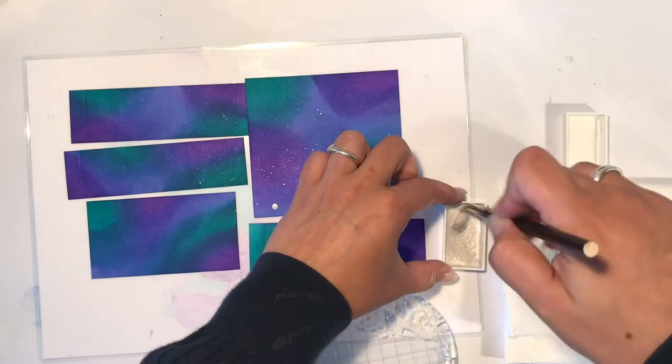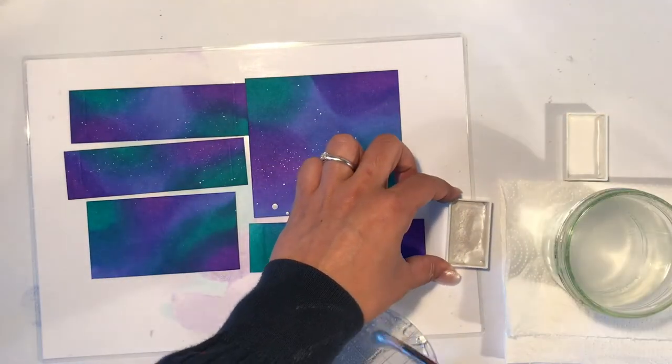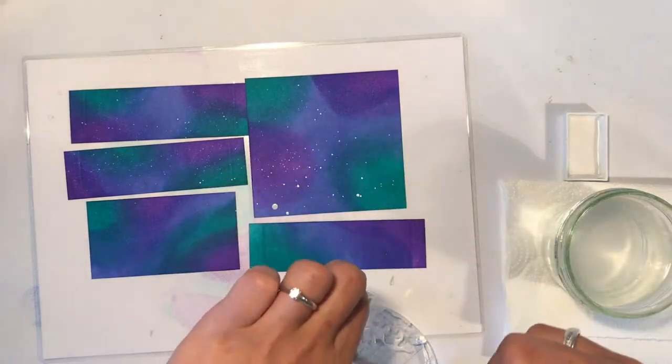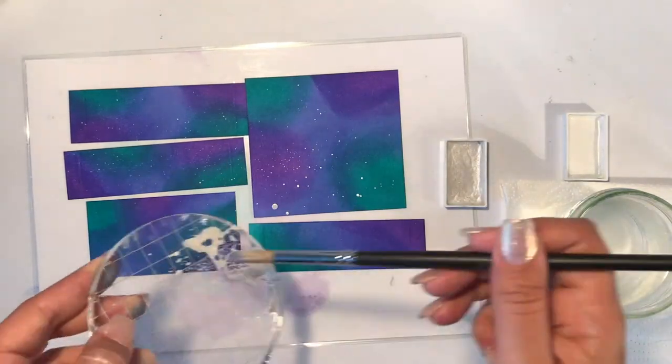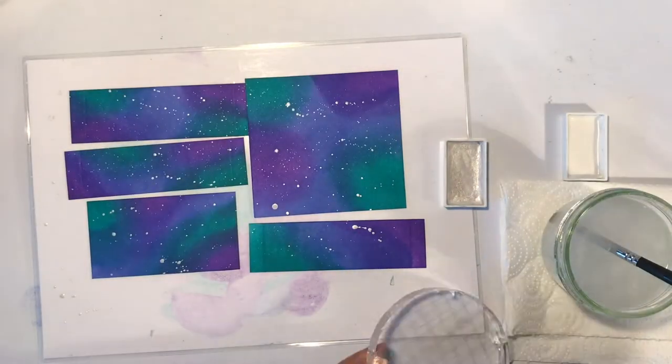For this technique I like to use my clear acrylic blocks and use the edges of them so it is easier for me to get the splatters. But you can also just tap on your brush and the paint will fall off or you can also use a toothbrush.